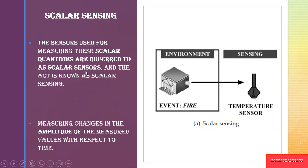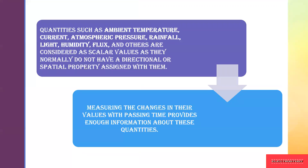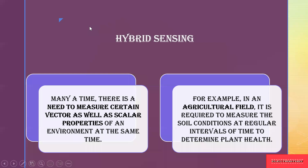The scalar sensor measures the change in amplitude with respect to time — say for 10 minutes, what is the amplitude. With respect to time, it keeps measuring the amplitude of the measured values. Some main scalar quantities include temperature, current, pressure, rainfall, light, humidity, and flex — these are the main scalar values that a scalar sensor senses.